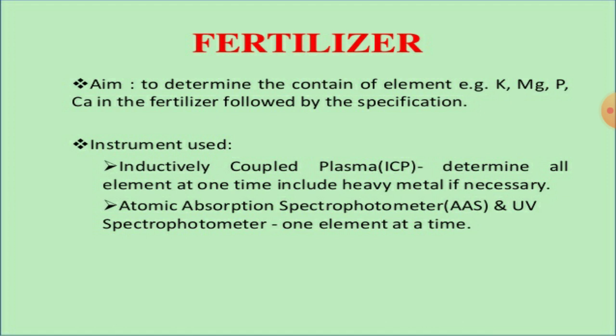The instruments used for fertilizer analysis include: inductively coupled plasma (ICP), which determines all elements at one time including heavy metals if necessary; atomic absorption spectrometer (AAS); and UV spectrophotometer. With AAS and UV spectrophotometer, only one element at a time can be analyzed.